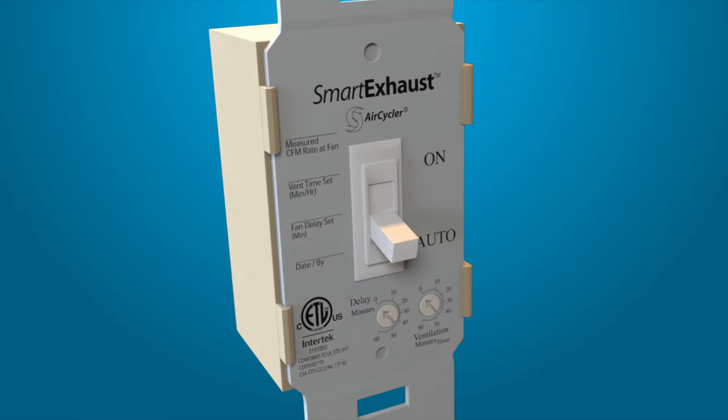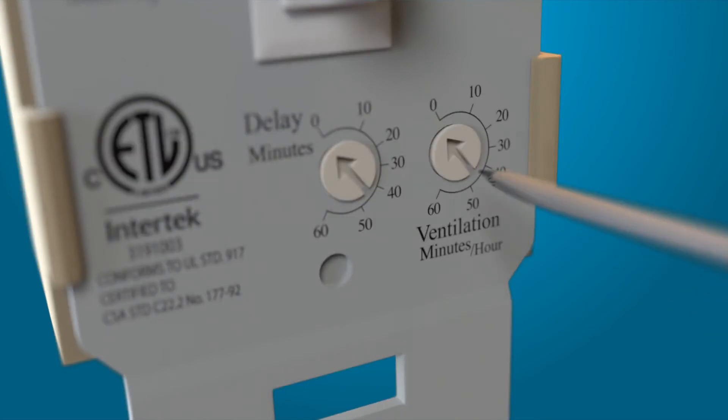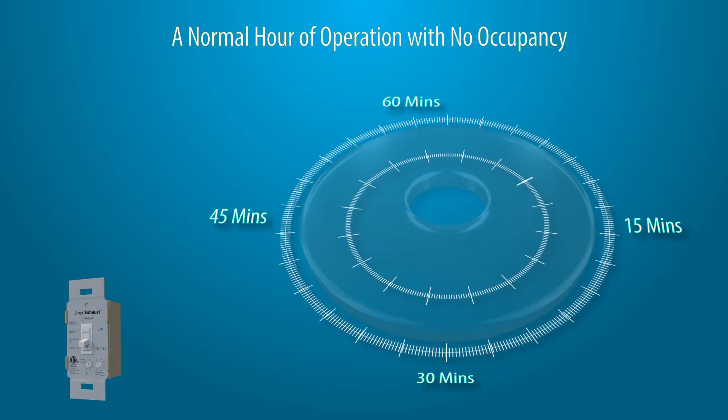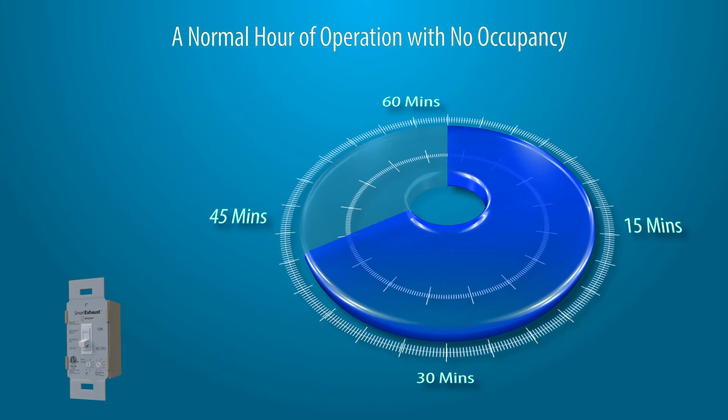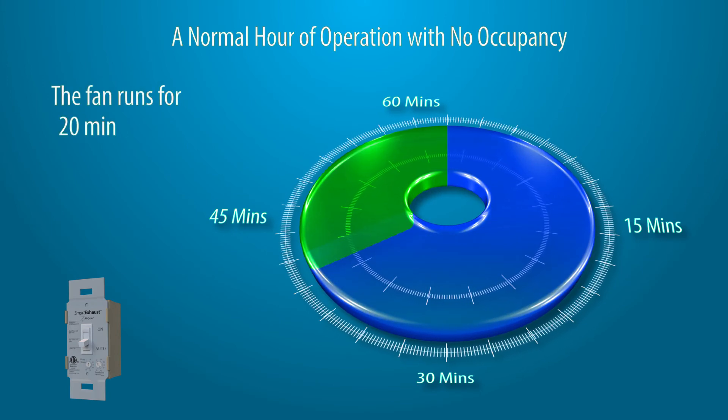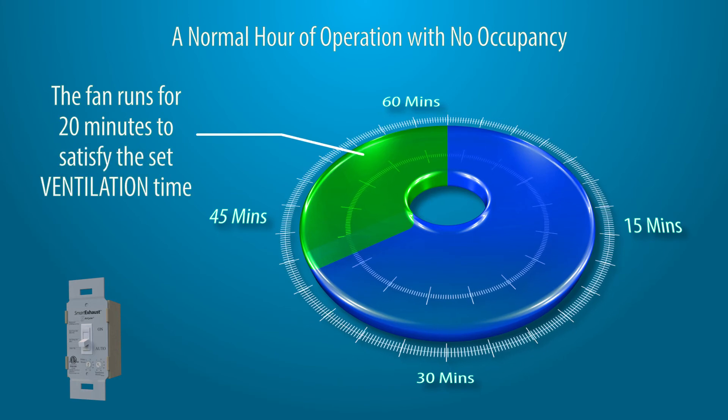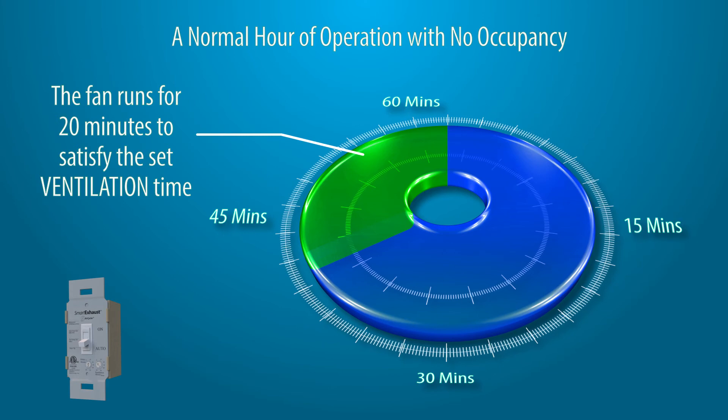Here's how it works. The user wants to ventilate the bathroom for 20 minutes every hour with a 10-minute delay. The ventilation dial is set to 20 minutes per hour. The Smart Exhaust's microprocessor performs the following equation to determine when to run the fan to meet the ventilation setting based on 1 hour, 60 minutes. 60 minutes minus ventilation setting equals start vent time. 60 minutes minus 20 minutes equals 40 minutes. The Smart Exhaust will turn on 40 minutes into the hour and run for 20 minutes.